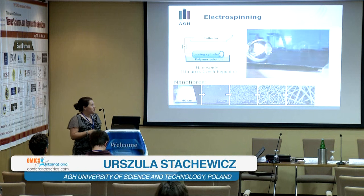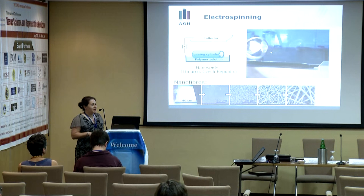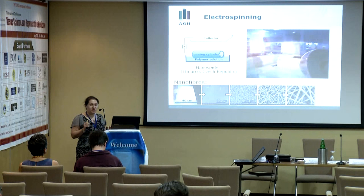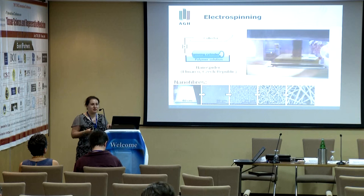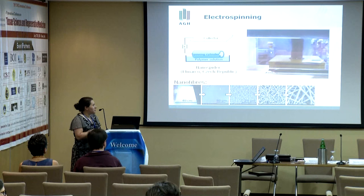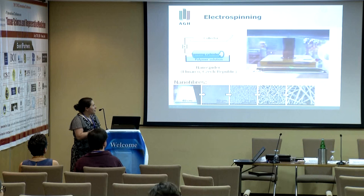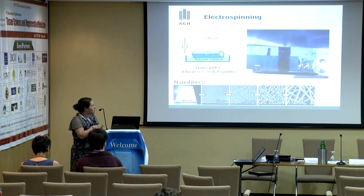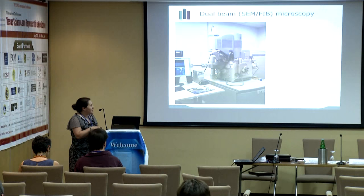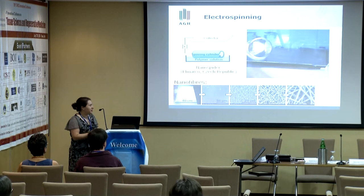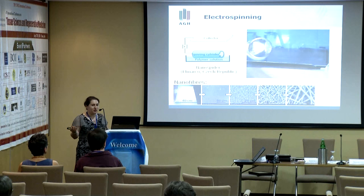Electrospinning is also a high-throughput method. There is also a method called nozzleless electrospinning where you have a cylinder dipped in the polymer solution, and then you collect your nanofibers on the top electrode collector. So you can produce a lot.